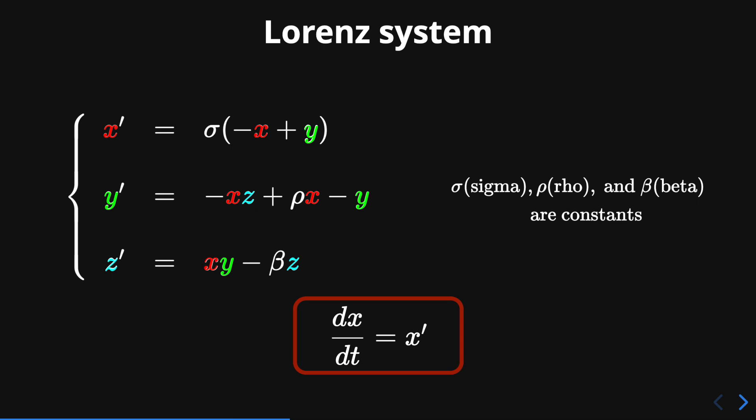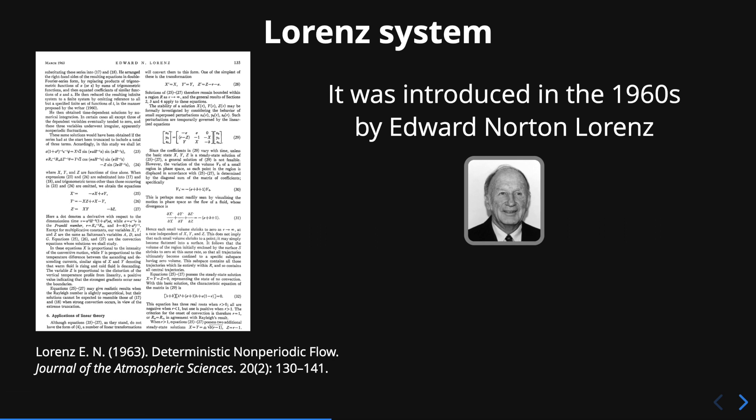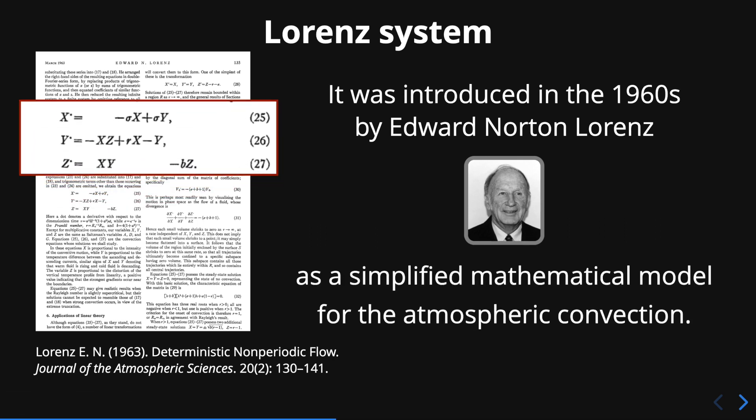The Lorenz system was introduced in the 1960s by Edward Norton Lorenz as a simplified mathematical model for atmospheric convection.